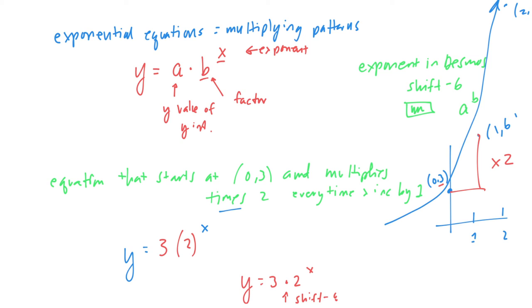So those would be two ways that you could represent it, but really it's set up the same way. Where do you start? What's your factor? And then for an exponential equation where you're multiplying, the only different thing is that the x is an exponent, because exponents tell us how many times to multiply times the base.